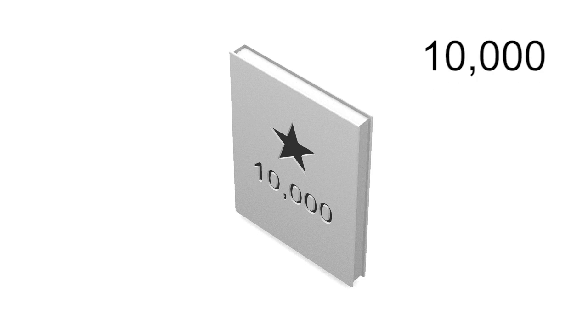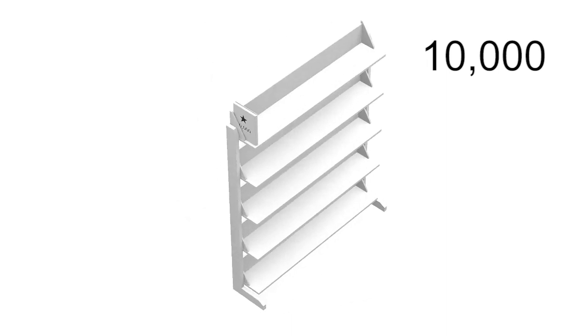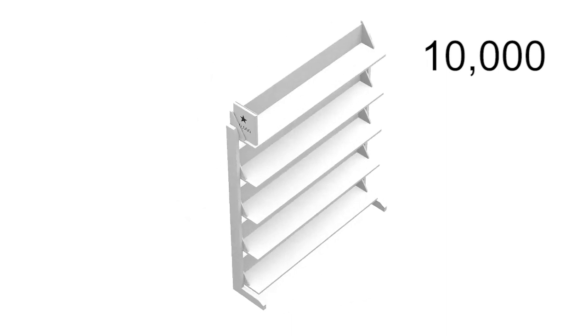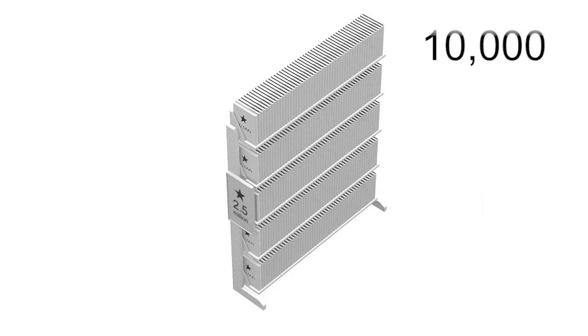A 200-page book is roughly an inch thick, so it's safe to say that we could build an average bookshelf with 5 shelves that holds about 50 books per shelf. That would get us to 2,500,000 stars.